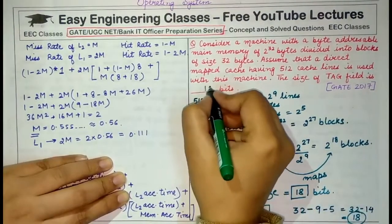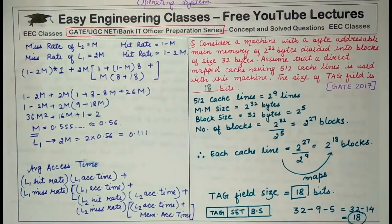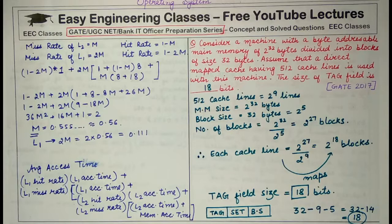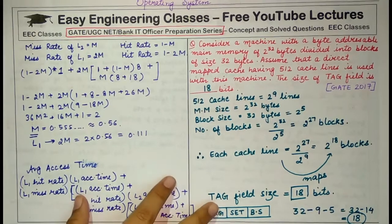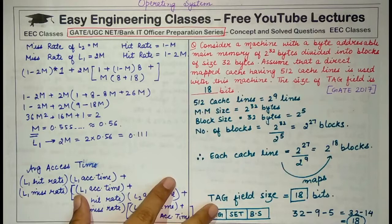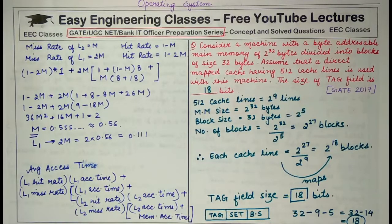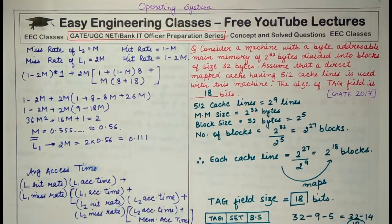The tag field size is 18 bits. The key relationship to remember is between the number of blocks and their mapping to cache lines. If you found this helpful, please like and share the video and let us know in the comments. Subscribe to Easy Engineering Classes and press the bell icon so you don't miss upcoming videos. Thank you for watching — good luck!